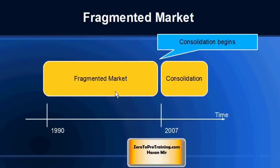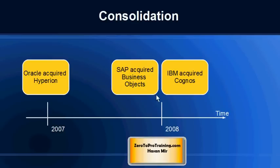In the 1990s and onwards, the market for business intelligence tools was very fragmented. The consolidation began in 2007, when three very important acquisitions took place within a span of two years. In 2007, Oracle acquired Hyperion and SAP acquired Business Objects. In 2008, IBM also acquired Cognos.